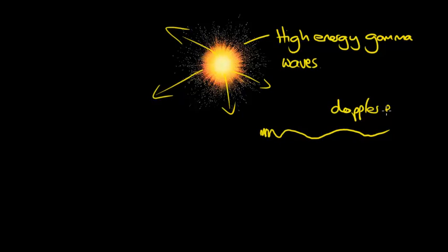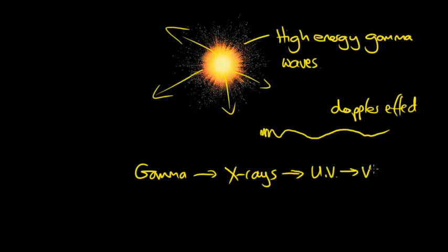The Doppler effect. And so as the age of the universe increased and it grew bigger and bigger, the gamma waves would become x-rays. The wavelength increases more to ultraviolet, then to visible light, and finally to infrared and microwaves, which we now observe from all directions in the universe.